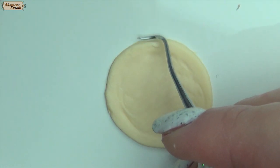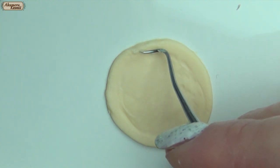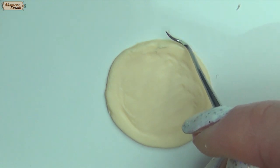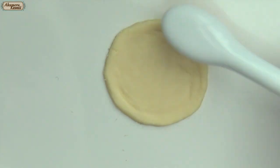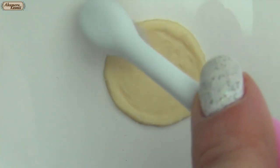I use the side of my needle tool to define the crust a little more. Then I use a children's toothbrush to add some texture to the crust.